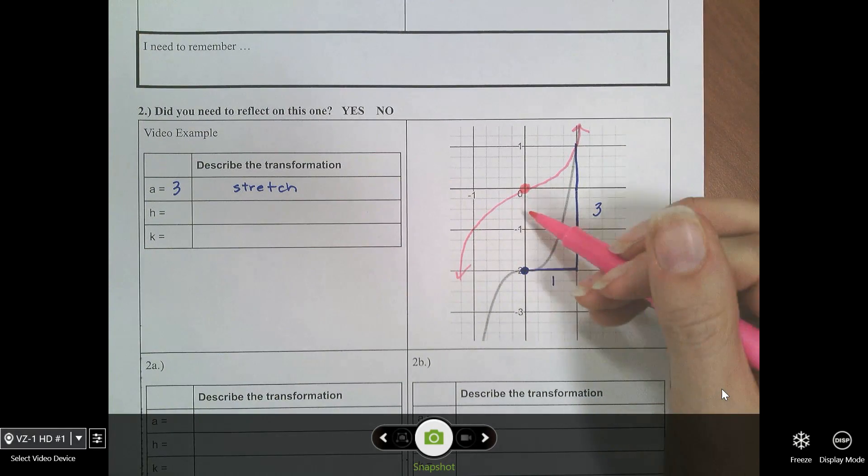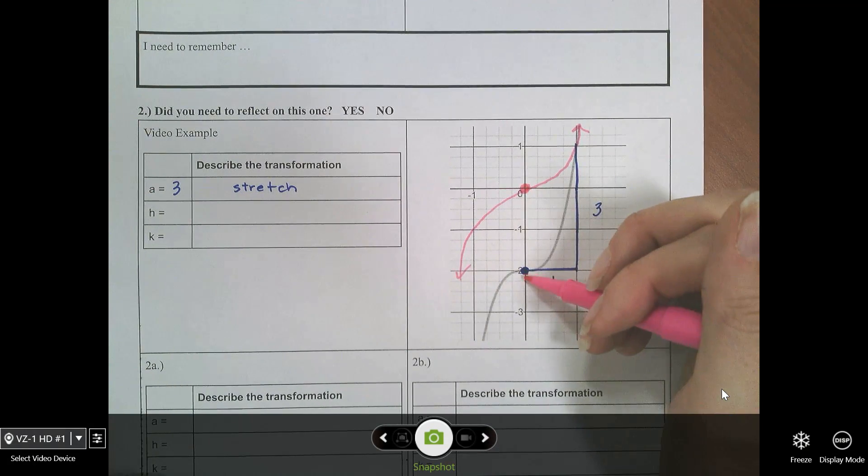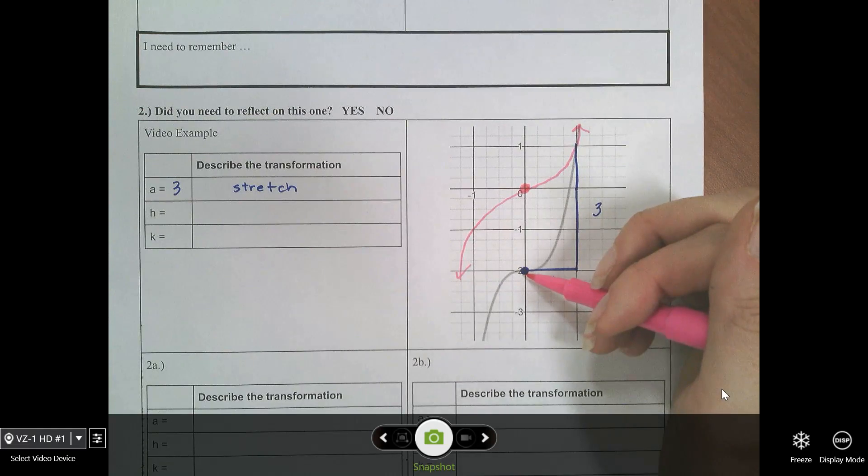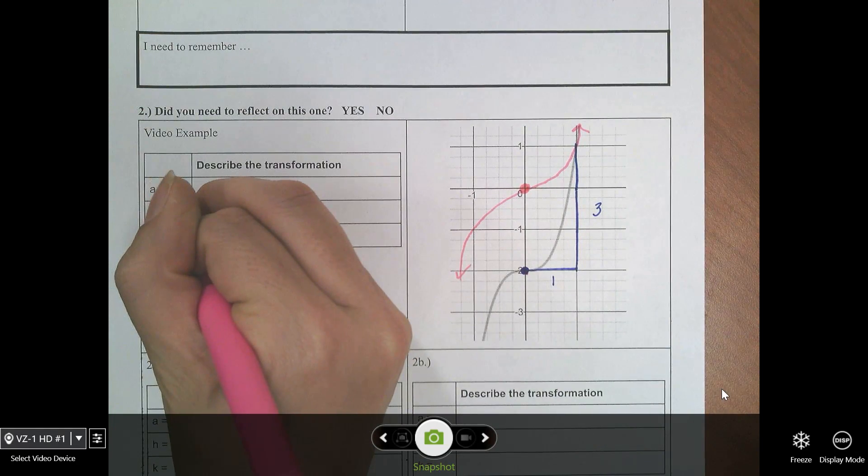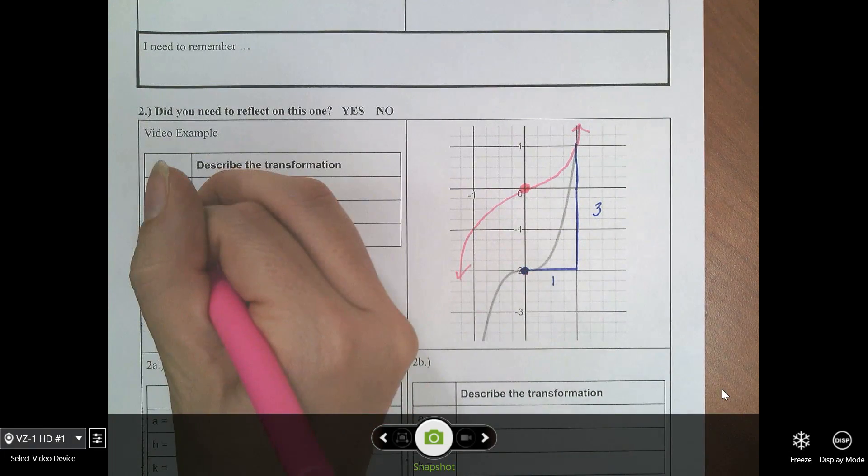So, we have to ask ourselves, how did this point go from here to here? And in this case, we shifted down two. That's our k value. Since our turning point here didn't shift left or right, our h is zero.